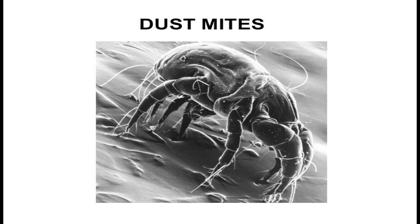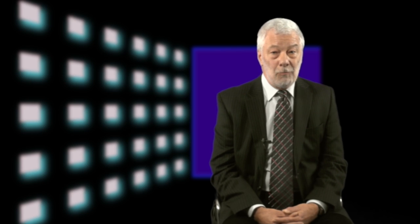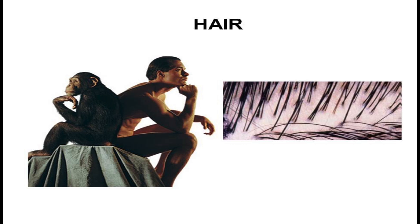Then there are the dust mites. We lose between 4 and 9 pounds of dead skin cells every year, which is the food for the mites. Then we will look at hair, its functions, how it grows and how it changes as we age.